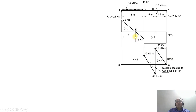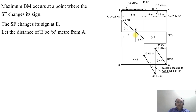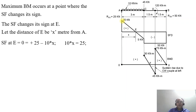The SF changes its sign from positive to negative at point E. We need to find the distance of E from A. Maximum bending moment occurs at a point where SF changes its sign, so let the distance of E be x meters from A. Setting SF at E equal to 0: 25 minus 10 into x equals 0, giving x equals 2.5 meters from A.